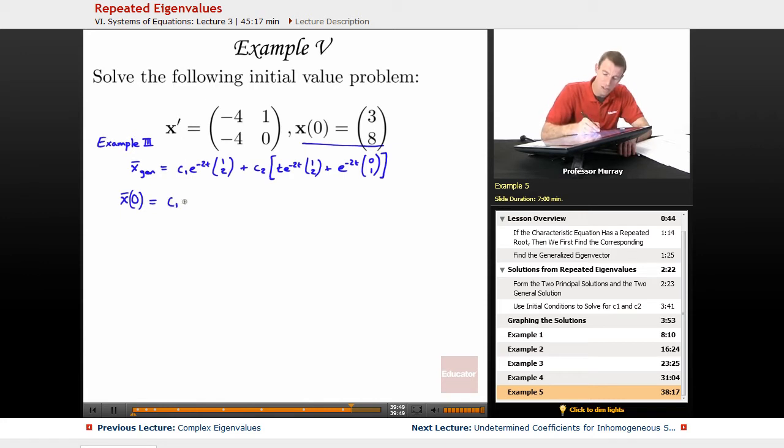I'll get c1, e^0 is just 1, so (1, 2), plus c2 times 0 e^0 times (1, 2), plus e^0 times (0, 1).